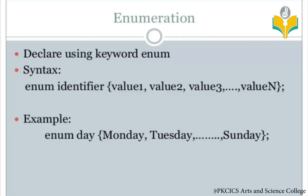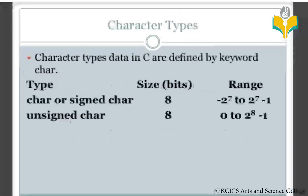User-defined data types also include enumeration. We declare a user-defined keyword: enum. The syntax is: enum identifier { value1, value2, value3, ... up to value n }. That is the concept of enumeration, which is also a user-defined data type.